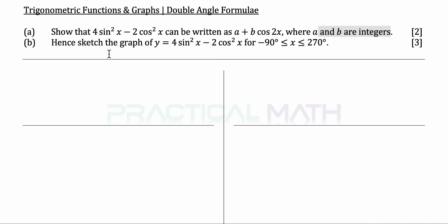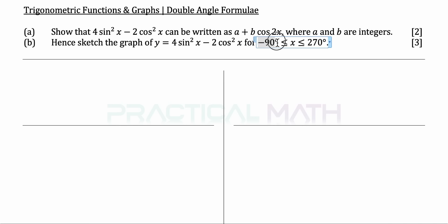In part B, you have to sketch the graph of the same equation, y equals 4sin²x minus 2cos²x, for the range of negative 90 degrees to 270 degrees inclusive. That is a 3-mark question.